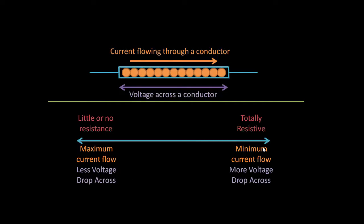On the other end of the spectrum are very resistive substances that really don't like to let current flow at all. Electrons meet a lot of resistance going through them, so minimum current flows. And since V equals I times R, if R is very large, V is going to be large — meaning there's a significant voltage drop across that device.